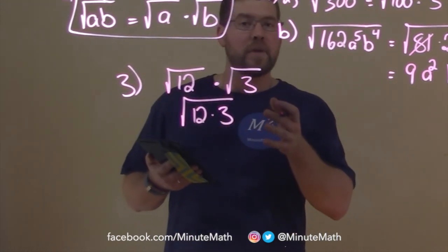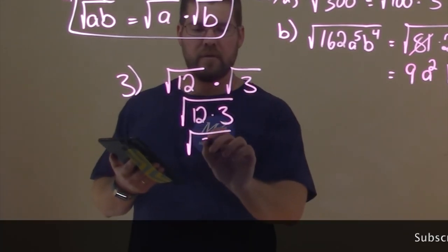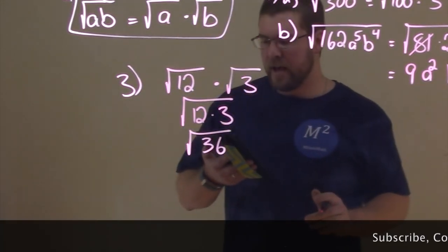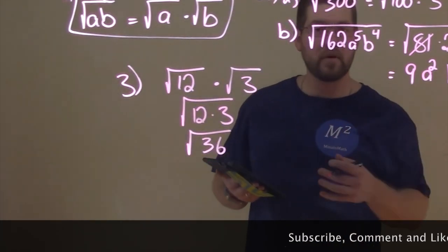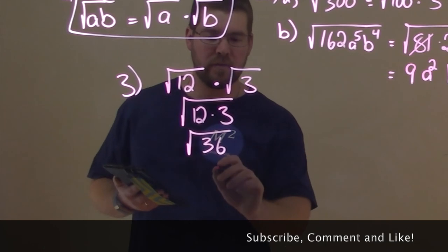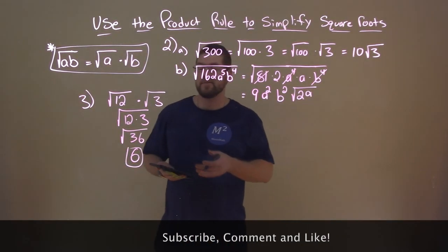Then, from there, 12 times 3 is 36. So the square root now of 36. And what is the square root of 36? Well, 6 times 6 is 36. So the square root of 36 is just 6. And there, we have our answer.